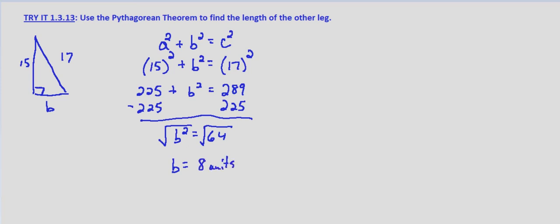And to check this, we can just make sure, substitute back in. Does 15 squared plus 8 squared equal 17 squared? 225 plus 64, 289.